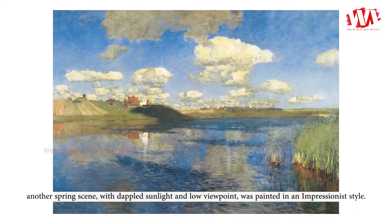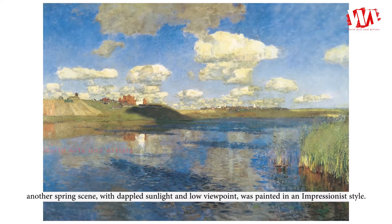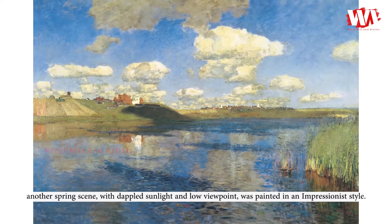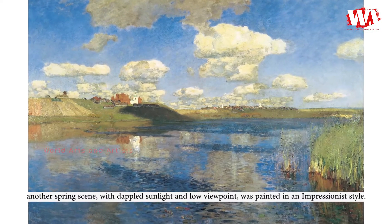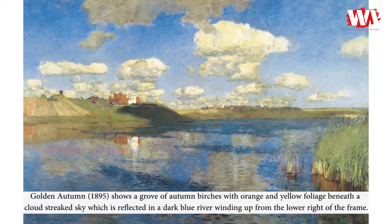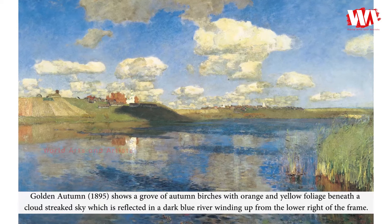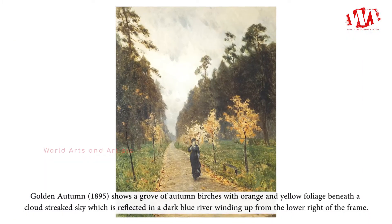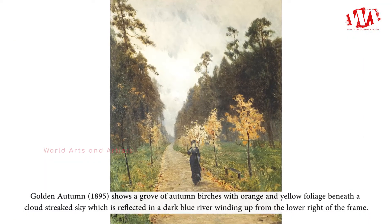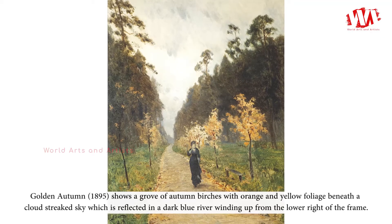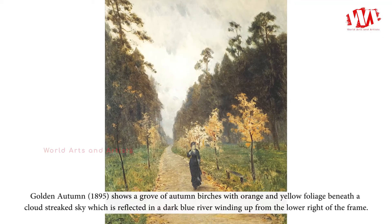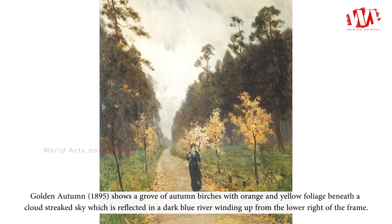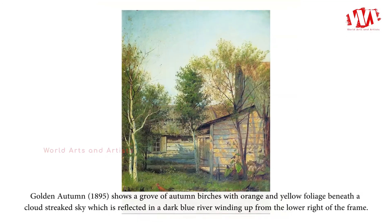Birch Grove (1885–89), another spring scene with dappled sunlight and low viewpoint, was painted in an impressionist style. Golden Autumn (1895) shows a grove of autumn birches with orange and yellow foliage beneath a cloud-streaked sky, which is reflected in a dark blue river winding up from the lower right of the frame.